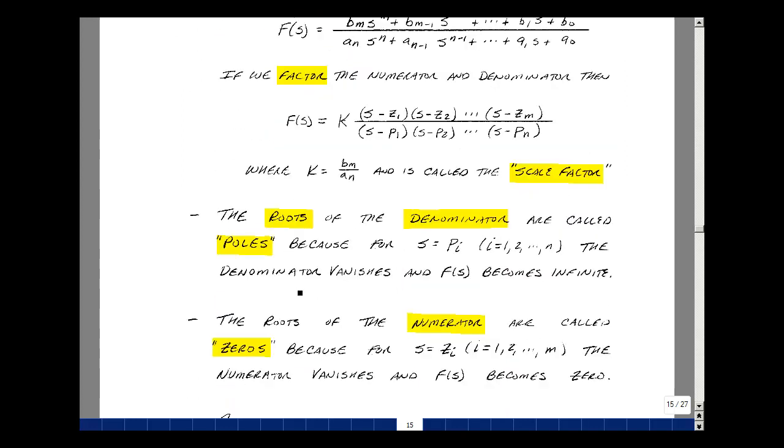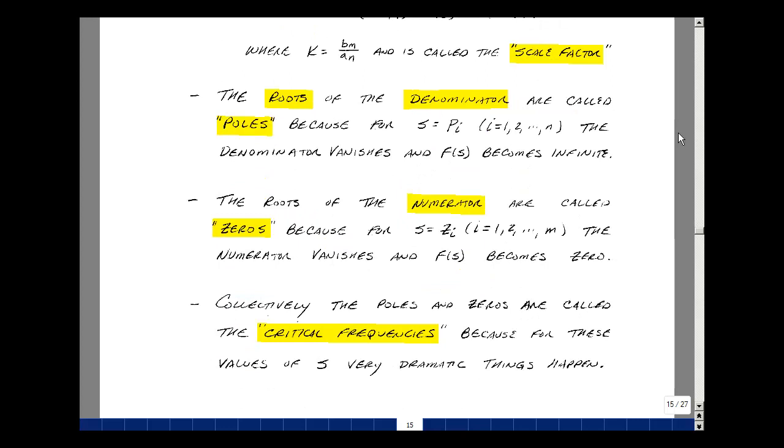The roots of the denominator we call poles because when s equals p_i, i equals 1 through n, the denominator equals zero and the reciprocal becomes infinite. The term derives from a tent pole. The roots of the numerator we call the zeros because when s equals z_i, i equals 1 through m, the numerator vanishes and the function becomes zero. Collectively, we call the poles and zeros the critical frequencies because at these values of s, very dramatic things happen to the function. It goes to zero or infinity.